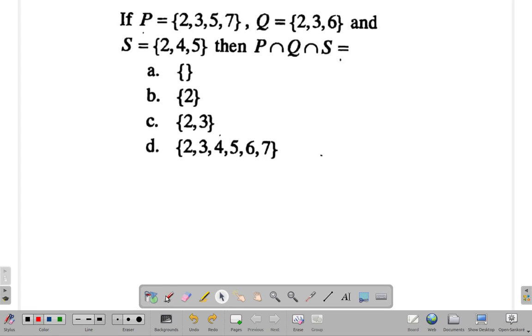I see 2 in P, 2 in Q, 2 in S, okay so 2 is there. Nice. About 3? 3 is in P, 3 is in Q, I don't see 3 in S. 5? 5 is in P, I don't see 5 in Q. 7 is in P but I don't see it in Q.